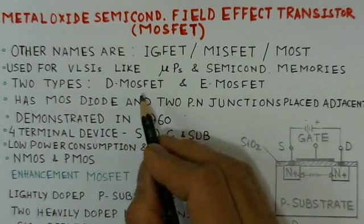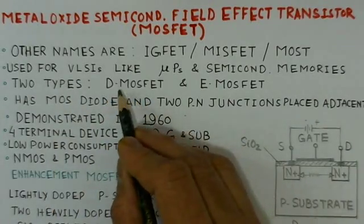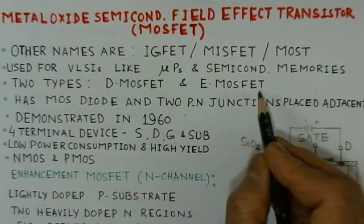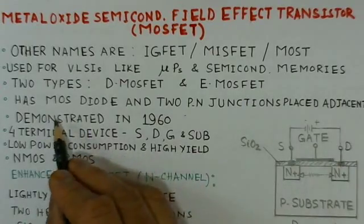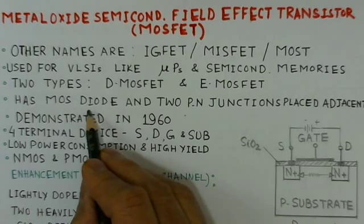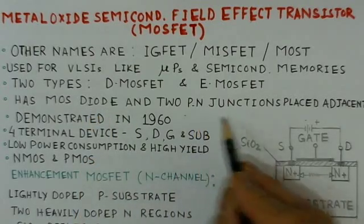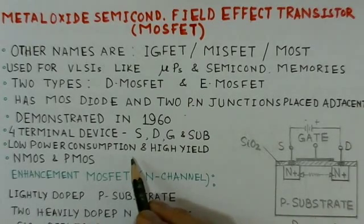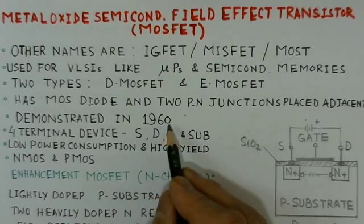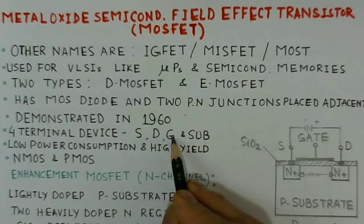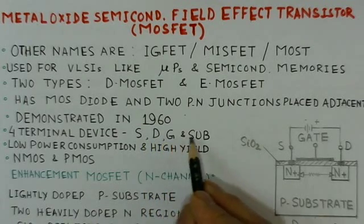There are two types of MOSFETs. One is the D-MOSFET, which is a depletion MOSFET, and the other is the enhancement MOSFET. The MOSFET basically has a MOS diode and two P-N junctions placed adjacent to it. It was demonstrated first in 1960. It is basically a four-terminal device having source, drain, gate, and substrate.